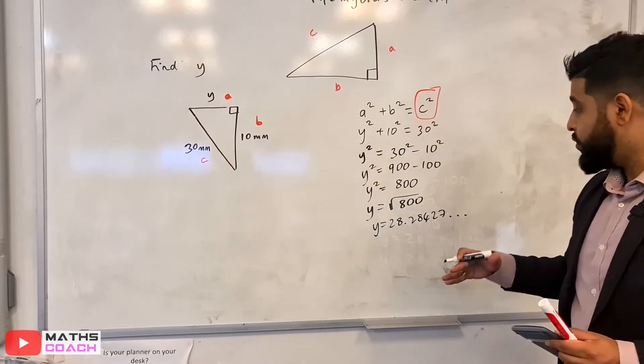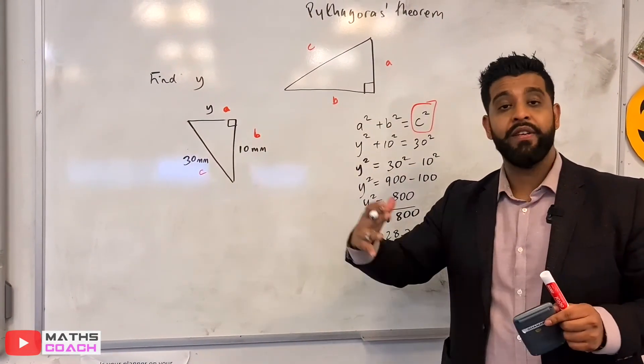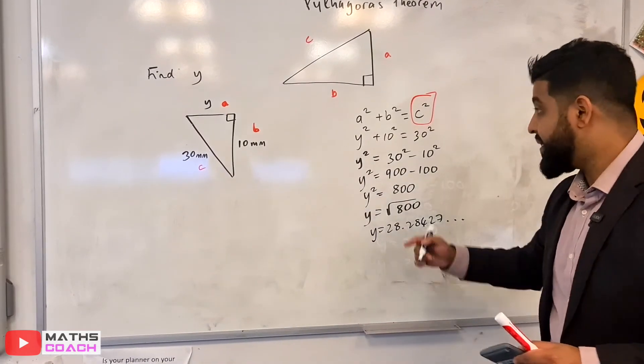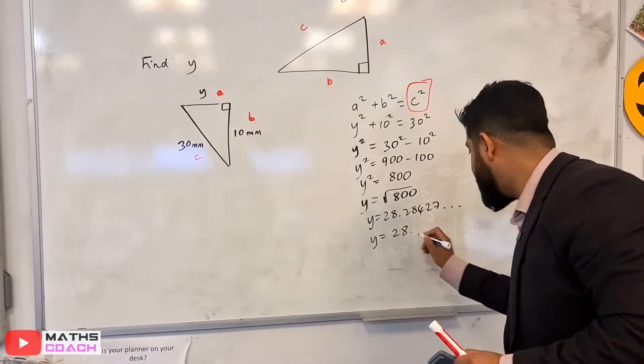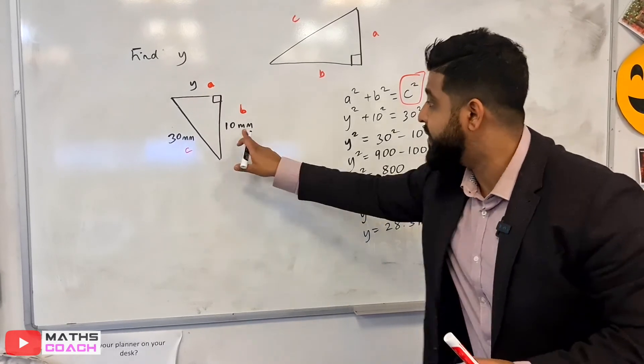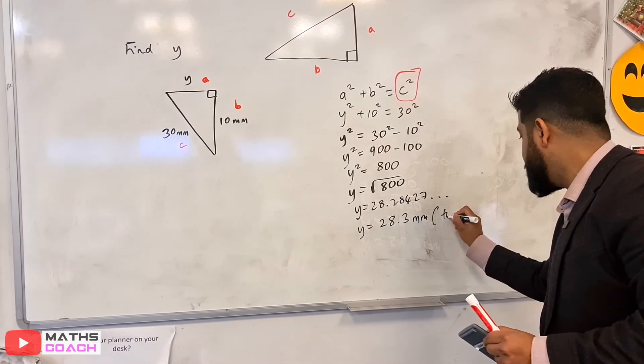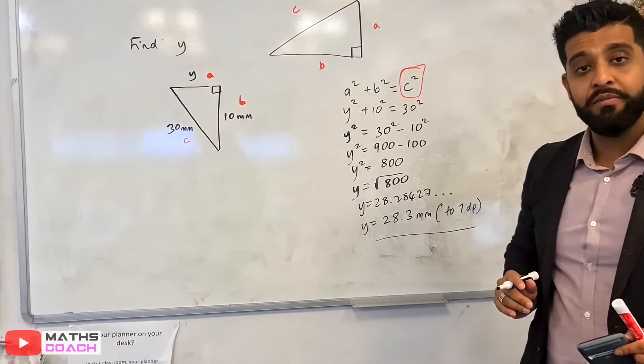427 dot dot dot. Now I'm going to round this to appropriate degree of accuracy. Sometimes the question would tell you to round to a specific decimal place. It doesn't in this case, it just said find Y. So I'm going to choose to round this to one decimal place, which would be 28.3 millimeters. Don't forget millimeters is the unit. And I'm going to write here, 2, 1, D, P. And that is my answer.